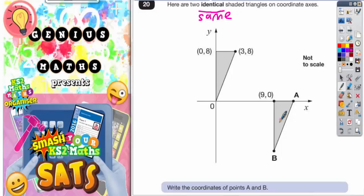So these two triangles are the same size and all the lengths would be the same length as well. That is actually coming to play very soon. So write the coordinates of point A and point B.